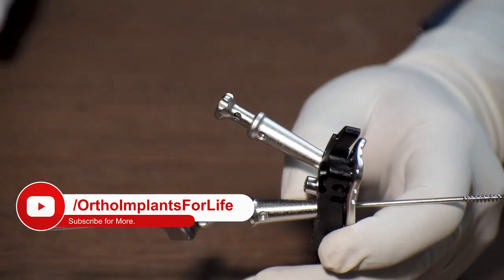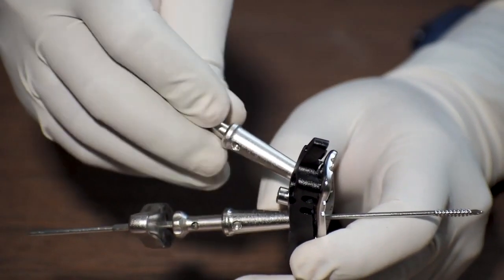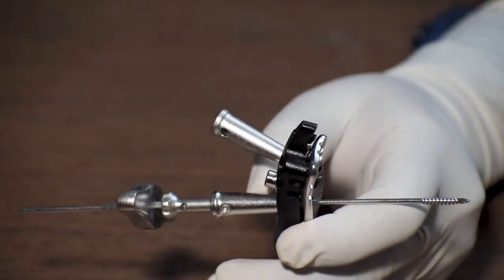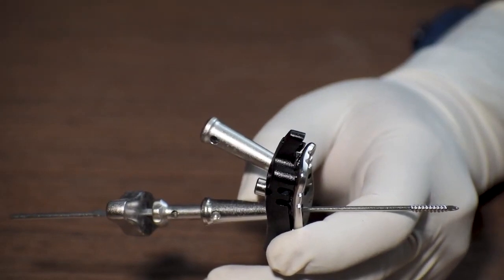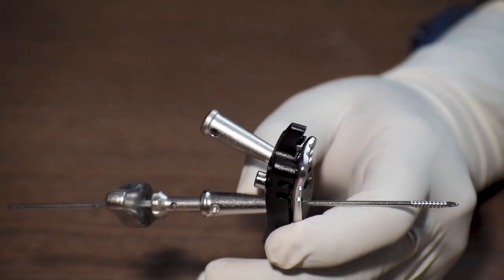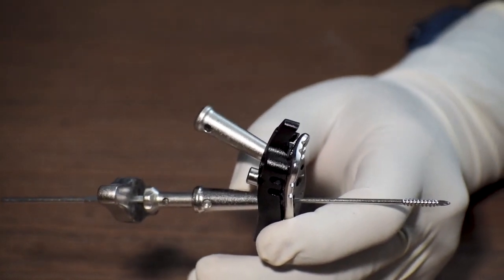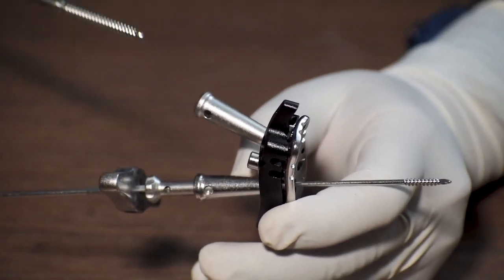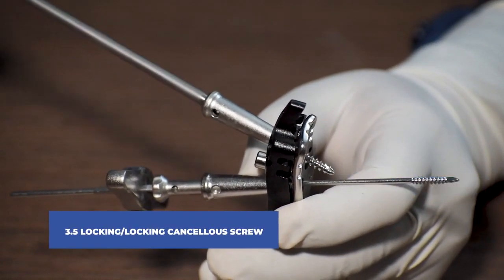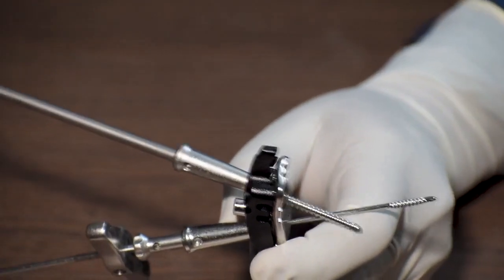Thereafter we will remove the length probe. Then we will remove the drill sleeve. The outer sleeve will stay back here. Then with the help of a screwdriver, we will fix a 3.5 mm locking or locking canceller screw of 45 mm length in this hole.